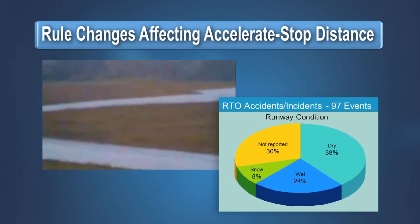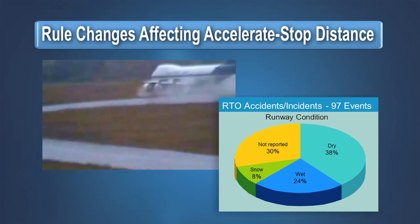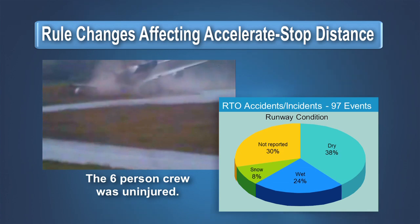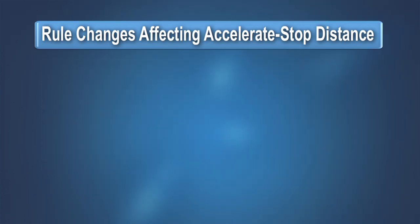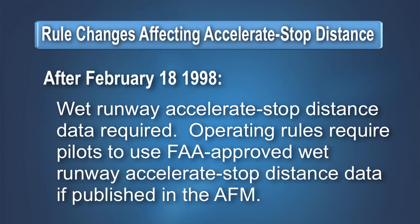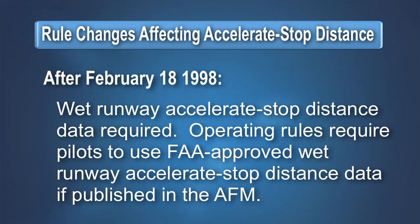In response to the disproportionate number of rejected takeoff accidents on wet runways, the certification rules were again amended in 1998. Manufacturers are now required to provide wet runway accelerate stop distance and wet runway takeoff distance data in the airplane flight manual for all newly type-certificated transport airplanes, and the operating limitations and rules require the use of this data when the runway is wet.